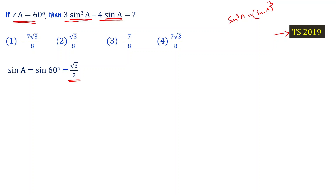Let's find the value of sin³A first. Sin³A equals sinA whole cube, which means sin³A equals root 3 by 2, whole cube.